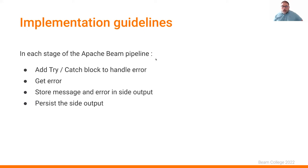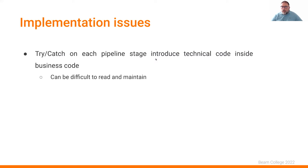What is the implementation guideline inside Apache Beam? For each stage — each transform in the data pipeline — we need to add a try-catch block to handle the error. When there is an error, we catch it, store the message and the error in a side output, and then persist the side output to a sink such as BigQuery or PubSub.